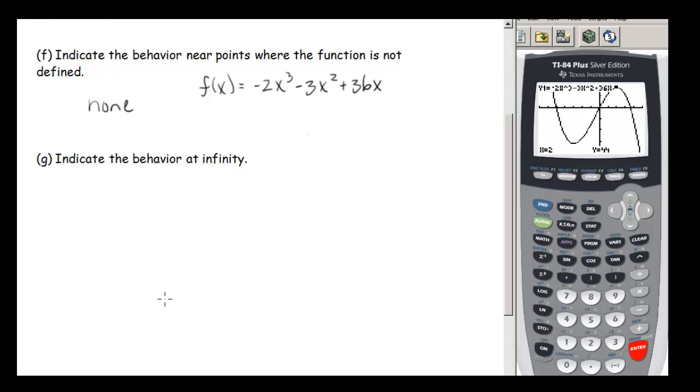Last question. Indicate the behavior at infinity. So if we look at our graph here, we can say that as x gets very negative, so as x tends toward negative infinity, our y values are shooting off towards positive infinity. And we could say as x tends towards positive infinity, our y values are shooting off down this way towards negative infinity.